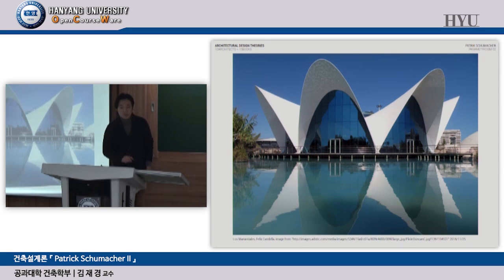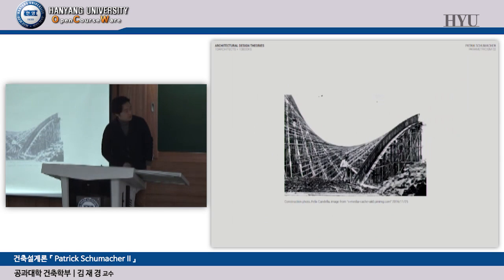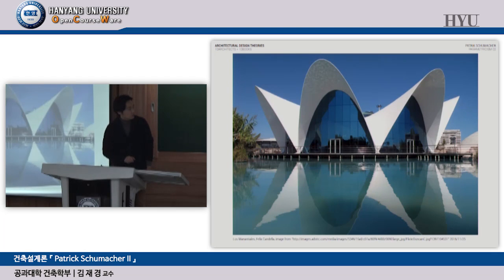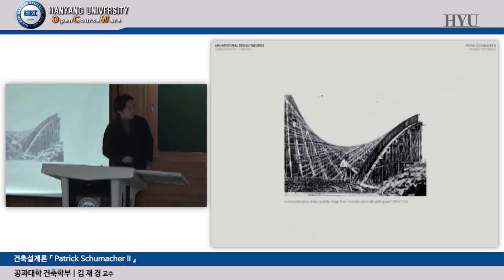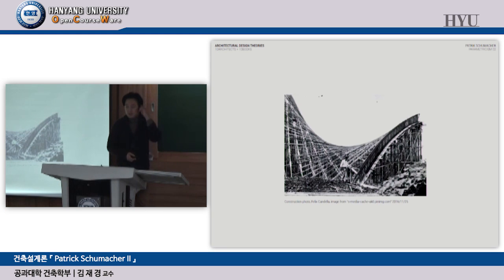Felix Candela made this famous thin vault. Gaudi and others used a similar geometric system — the hyperboloid. By using linear elements you can create two-way curvature. That is the logic of making these vaults. People have always tried to make interesting geometry, and two-way curvature is one method.